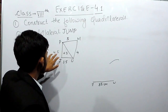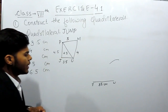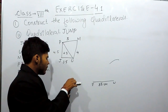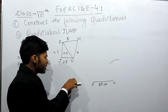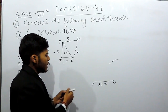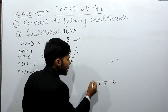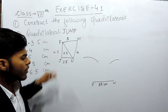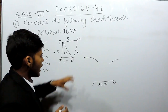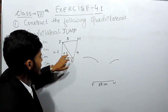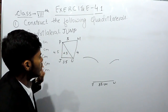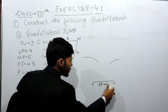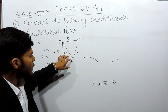Now from J we have to make an arc of 4.5 centimeters for point P. On the ruler, set the compass at point 0 and open it to 4.5 centimeters, then mark an arc. The two arcs intersect at point P — now you know the position of P from both J and U.